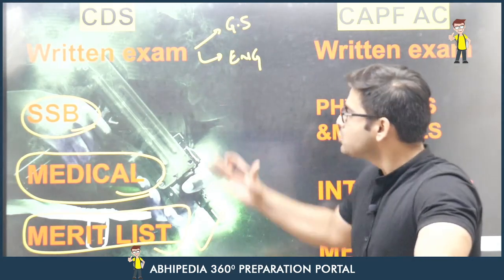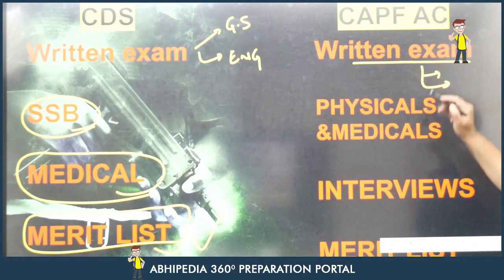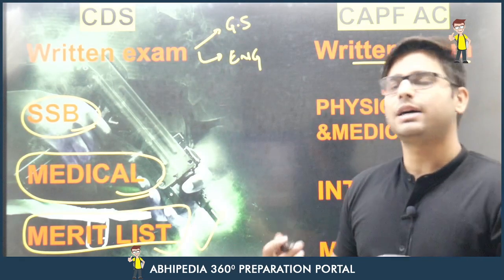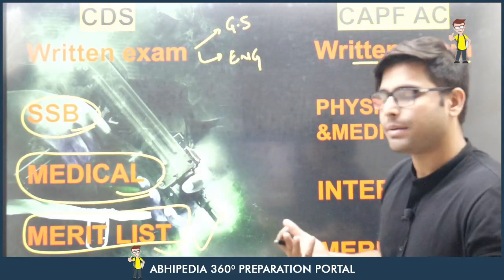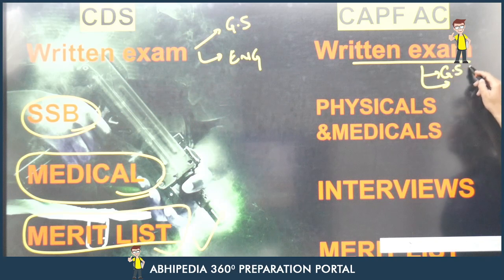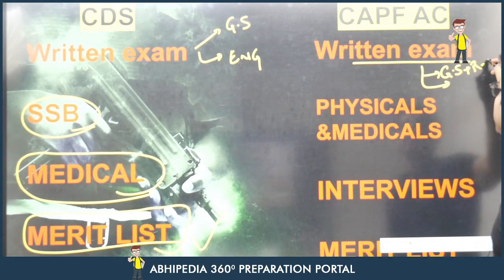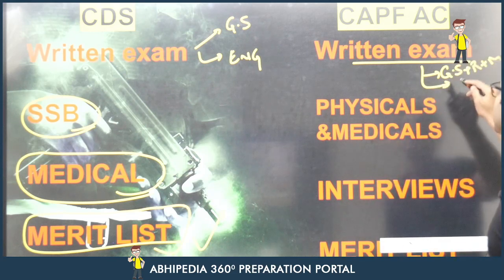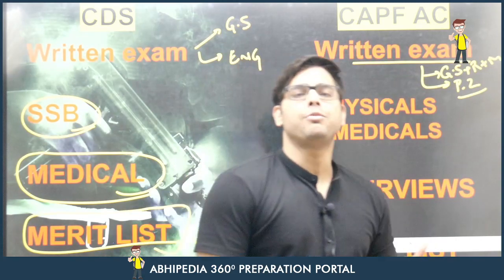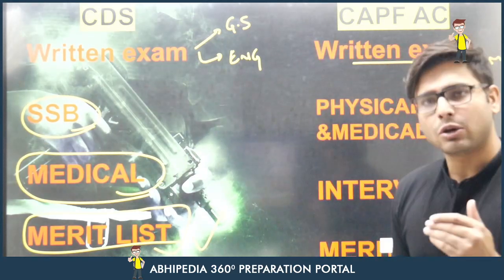In the CDS written exam, there are two written exams and the IMA/OTA option. In Paper 1 — which we call the General Studies exam — you have General Studies and Reasoning plus Maths. Paper 2 is of subjective nature where you have essay, argument, report, comprehension, and grammar.